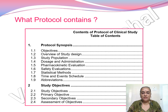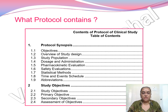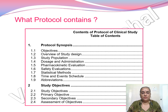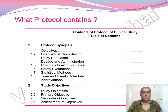The contents of the protocol include a protocol synopsis covering: the objective, study design, study population, dosage and administration, PK evaluation, safety evaluation, statistical methods — this section provided by the biostatistician — and the time and events schedule provided by the principal investigator in coordination with doctors and clinical staff as to when laboratory parameters should be collected. The study objectives section includes primary objective, secondary objective, and assessment of objectives.